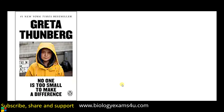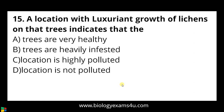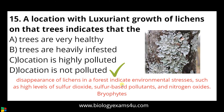Question number fifteen: a location with lush growth of lichens on the trees indicates — a) trees are very healthy, b) trees are heavily infested, c) location is highly polluted, d) location is not polluted. The answer is location is not polluted. Disappearance of lichens in a forest indicates environmental stresses such as high levels of SO2 and NO2. Bryophytes are also indicators of air pollution.